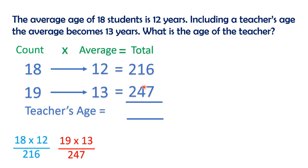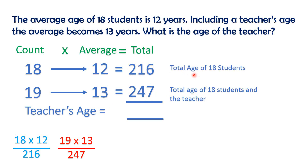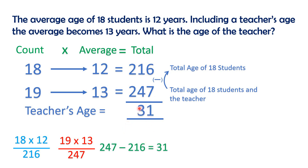18 students plus one teacher: what is the total age? Total age of 18 students and teacher is 19 into 13, which equals 247. Teacher's age is 247 minus 216, which equals 31. The teacher's age is 31 years.